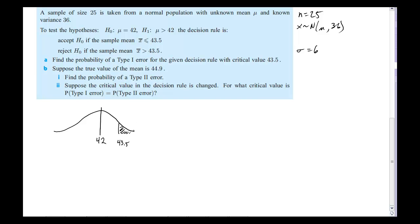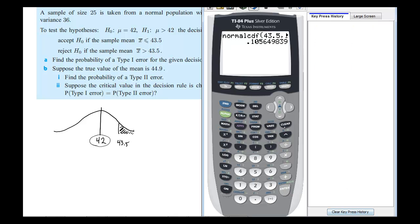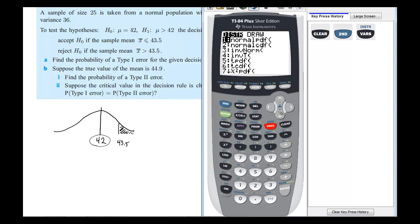So Type 1 error, remember, is that we reject it even if it's true. Now, any of these values are possible if the mean is really 42, but if we get something out here, it's far enough away that we're going to reject and say it's not very likely. It's more likely that the mean is supposed to be larger than 42. So let's calculate that on our calculator. Since I'm looking for an area and it's a normal curve, we'll go second distribution, normal CDF.